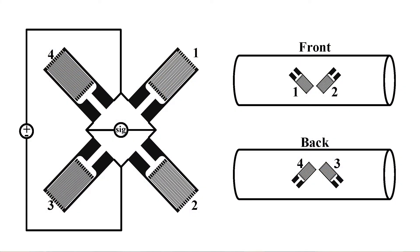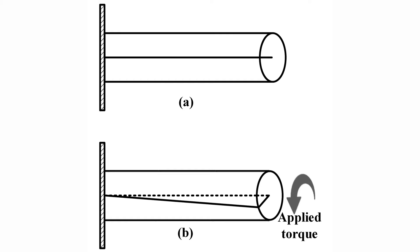Torque sensor measures deformation of the sensor body to deduce torque. Conventionally, it is done either by measuring the 2D surface strain or by measuring the twist angle of a torsion bar.